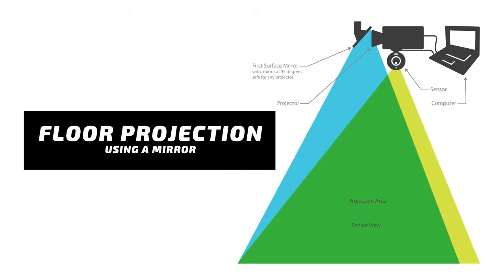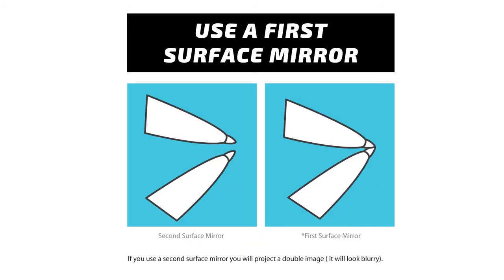The third way is to use a mirror to deflect the projection downwards. Mount the projector to the ceiling and place a mirror near the lens. The mirror has to be at a 45 degree angle so that the projected image is not skewed. The mirror should be a first surface mirror.